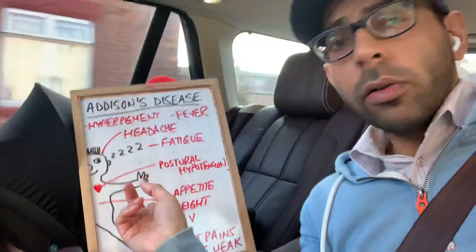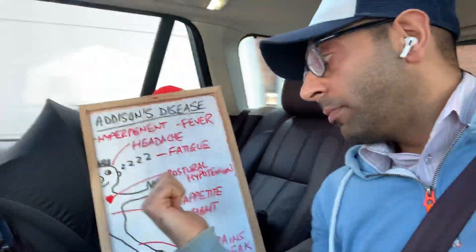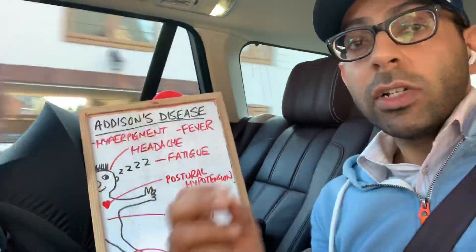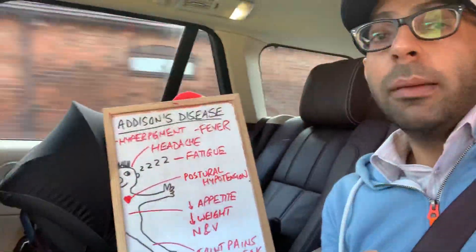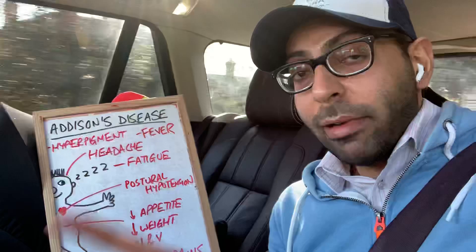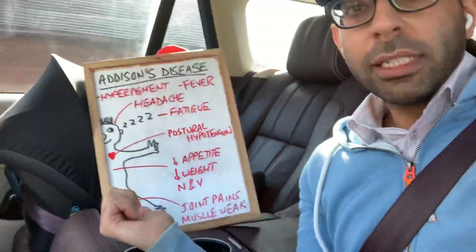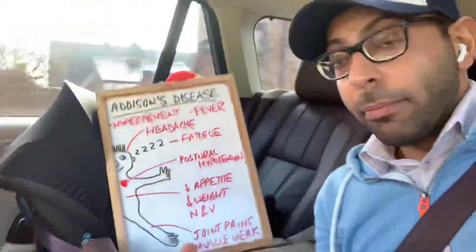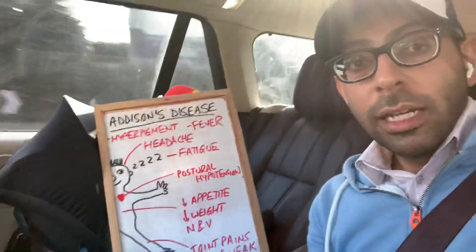There are lots of GI features: reduced appetite, therefore leading to reduced weight, and things like nausea and vomiting — again nonspecific, but think about them in the background depending on the collection of symptoms. Then musculoskeletal stuff: joint pains, muscle cramps, and muscle weakness — sorry about the jerkiness — all things that may present at some stage.